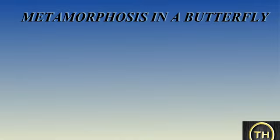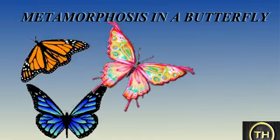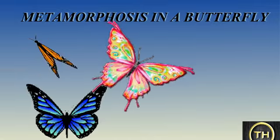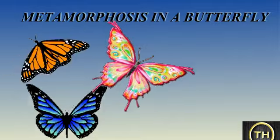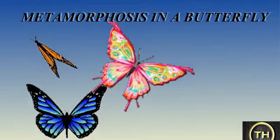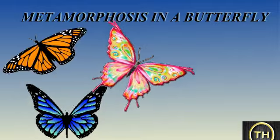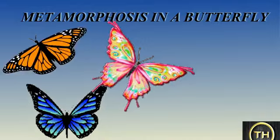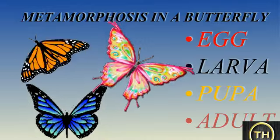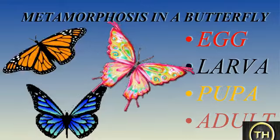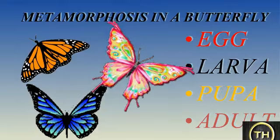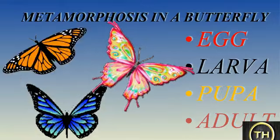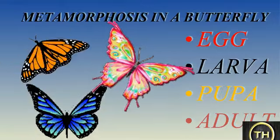Let's learn about metamorphosis in a butterfly. Butterflies of various shapes and beautiful colors are a part of our environment. As butterflies grow, they pass through four stages: egg, larva, pupa, and adult. The adult stage is called the butterfly.